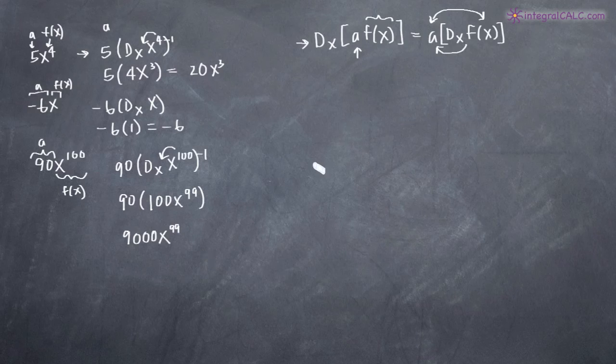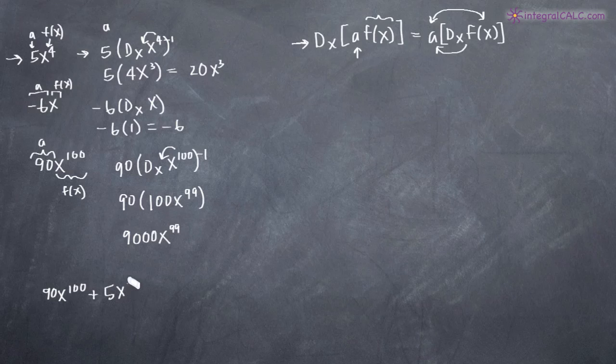So that's it. That's all this formula tells us in terms of how to find the derivative of a linear combination and you can do this with polynomials. So for example, if you had these added together, if your problem was 90x^100 plus the first example we did, 5x^4, you could do these one at a time.